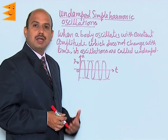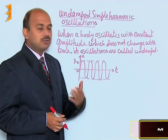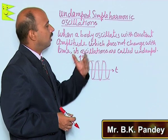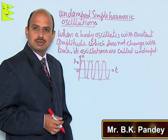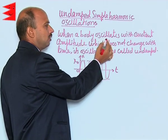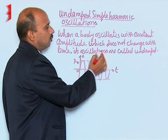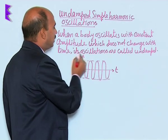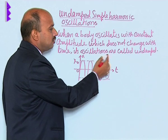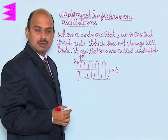To understand damped and undamped oscillations, we will first discuss undamped simple harmonic oscillations. When a body oscillates with constant amplitude which does not change with time, its oscillations are called undamped.